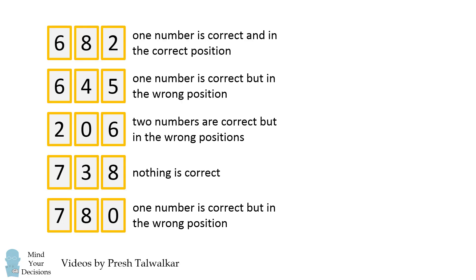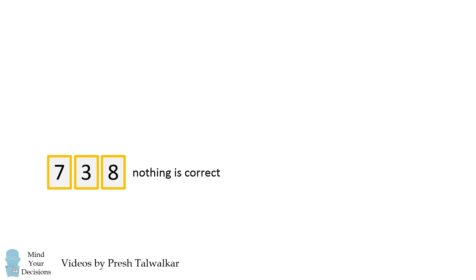How can we figure this problem out? Rather than working from the top clue down to the bottom, I like to try and find a clue that gives the most information. Personally for me, I would start with the fourth clue that 738: Nothing is correct. This means we can eliminate all three numbers 7, 3 and 8 from all of the possibilities.